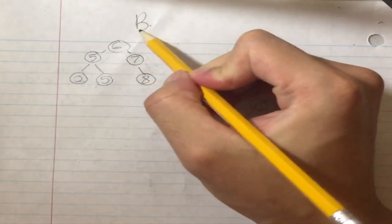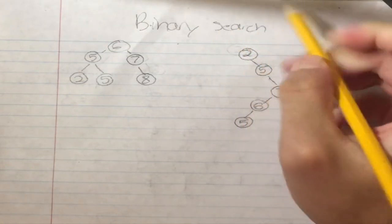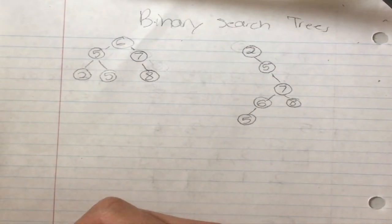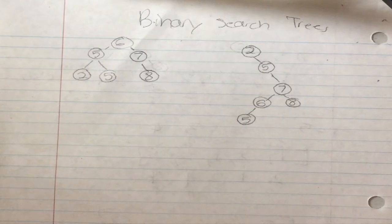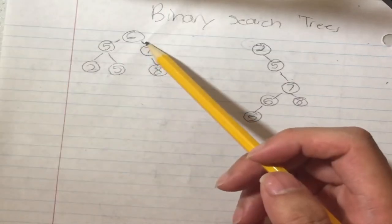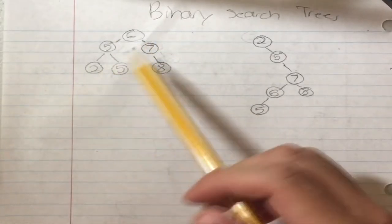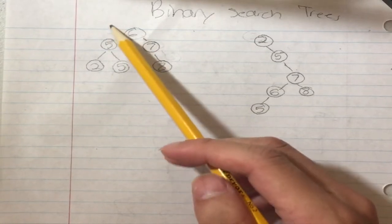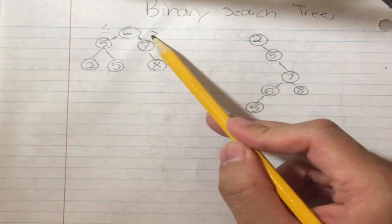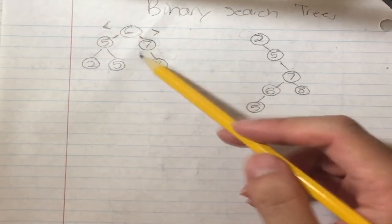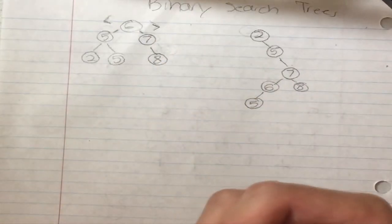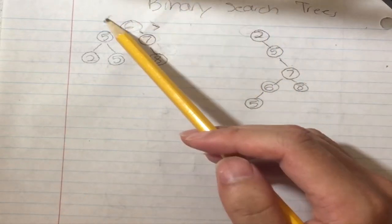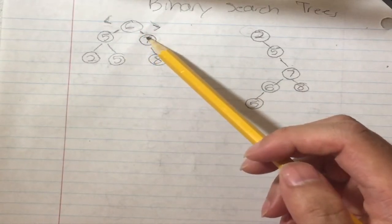This is a tutorial on binary search trees. A binary search tree is a tree structure where every node has a left child and a right child. Anything on the left side is going to be less than the current node, and anything on the right side is going to be greater than the current node.